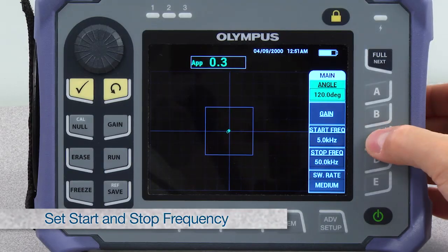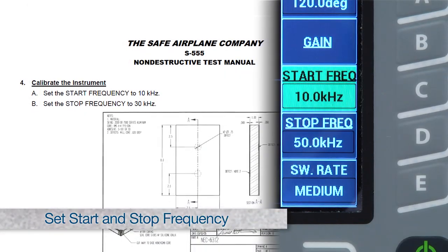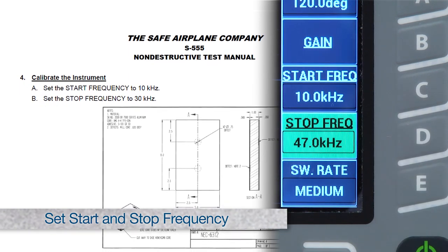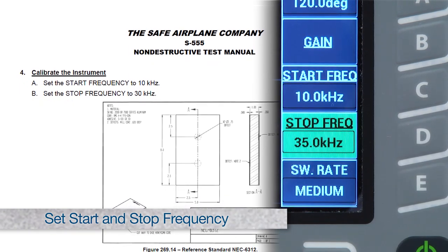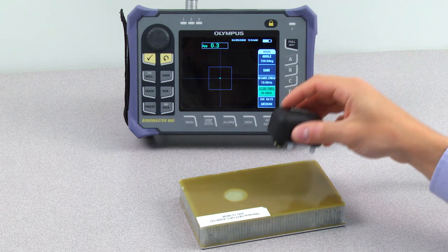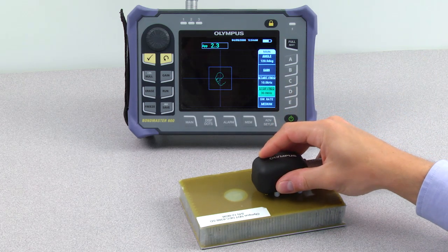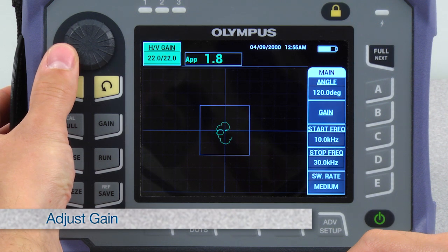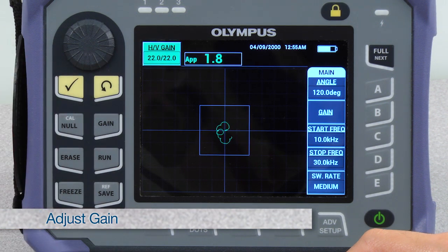If desired, change the start frequency and the stop frequency as recommended by the part manufacturer or the procedure. Put the probe on the defect-free area of the reference standard and press the gain key. Adjust the gain to maintain the signals within the alarm box.